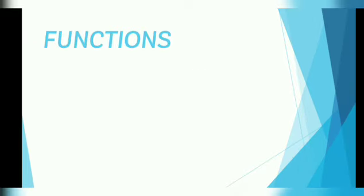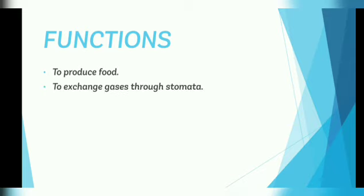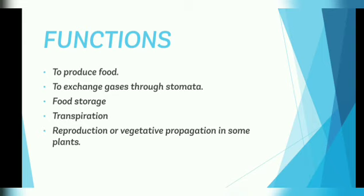Next is functions of the leaf. Leaves are very useful for plants. The main function is to produce food. They also exchange gases through stomata, store food, perform transpiration which means giving out water vapor from stomata, and in some plants, reproduction or vegetative propagation.